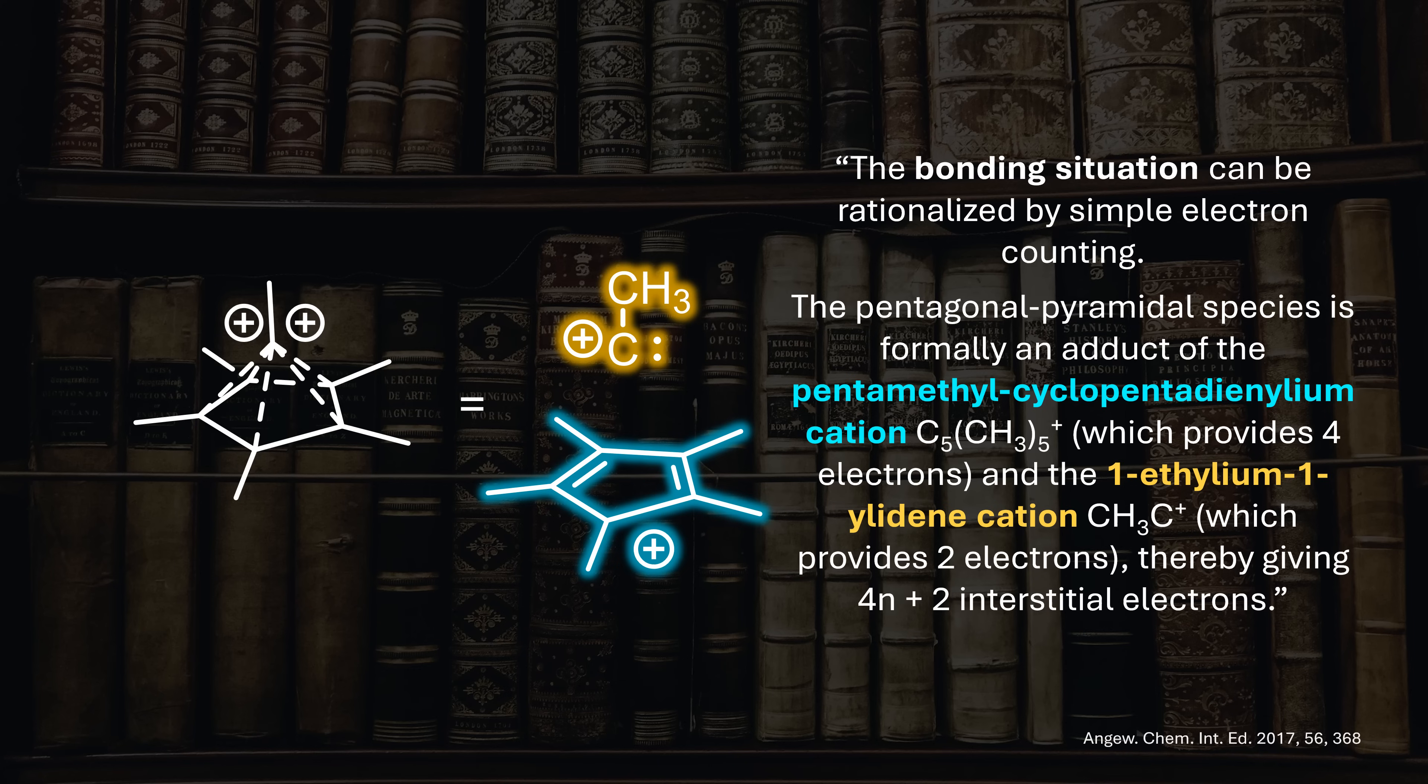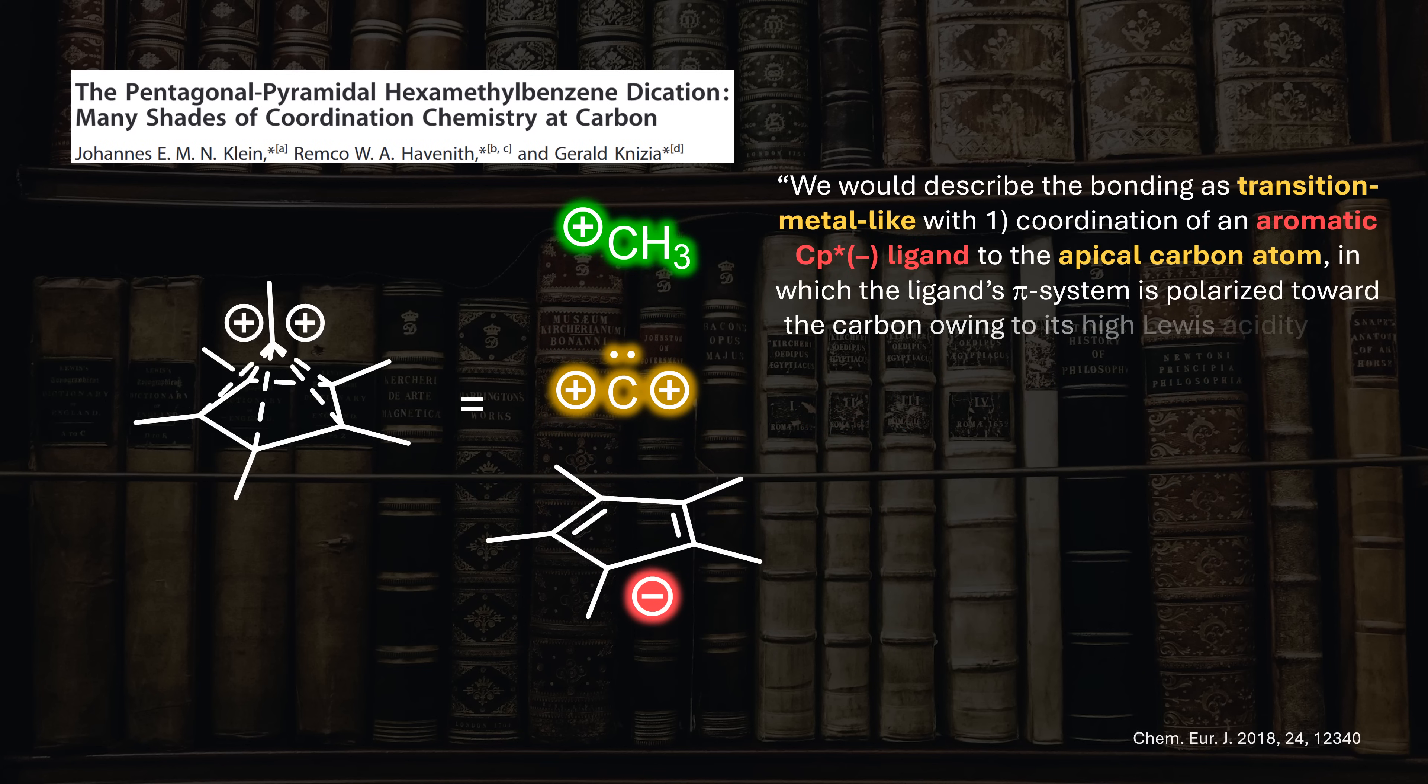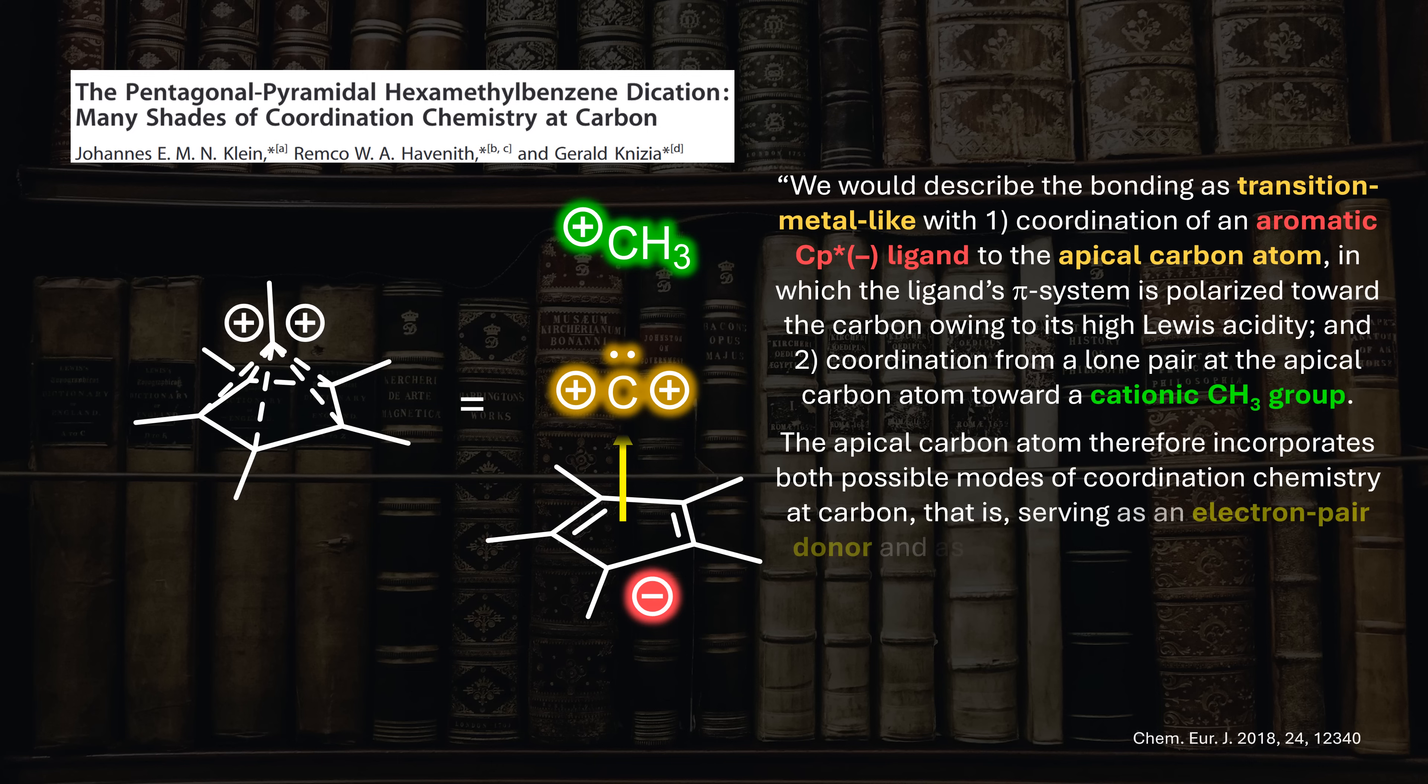However, subsequent research showed that there might be more than meets the eye here. Based on some fancy computations of effective oxidation states, they believe the cyclopentadienyl ligand is not cationic. Instead, it's an aromatic cyclopentadiene donor anion, and the top group is actually a formal methylcation. This means the central carbon behaves like a transition metal with two modes of coordination. On one hand, it binds a donor anion as a Lewis acid, and on the other, it donates an electron pair to the acceptor cation.